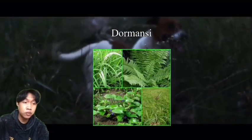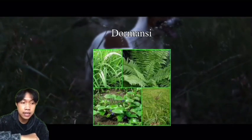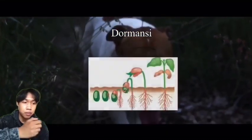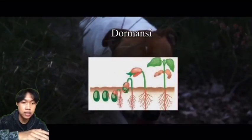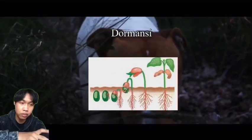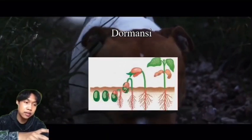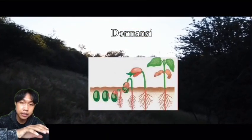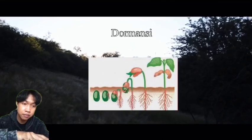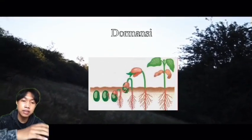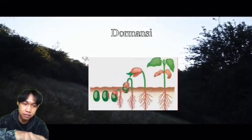Biji-biji gulma yang berada dalam tanah mempunyai tingkat dormansi yang berbeda-beda, sehingga perkecambahan dari suatu populasi biji gulma tidak terjadi secara serentak. Hal ini mengakibatkan biji-biji gulma dalam tanah akan tetap menjadi masalah selama biji-biji tersebut masih ada.